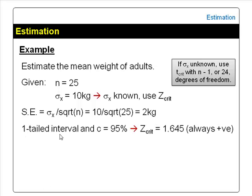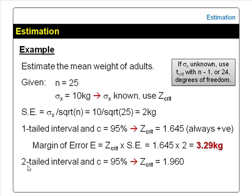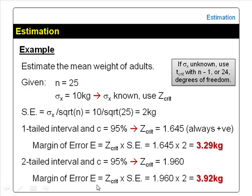If we are doing a one-tailed interval at 95% confidence level, Z-critical is 1.645. The margin of error E will be 1.645 × 2 = 3.29 kg. If we are doing a two-tailed interval at 95% confidence level, Z-critical would be 1.960. The margin of error will be 1.960 × 2 = 3.92 kg.